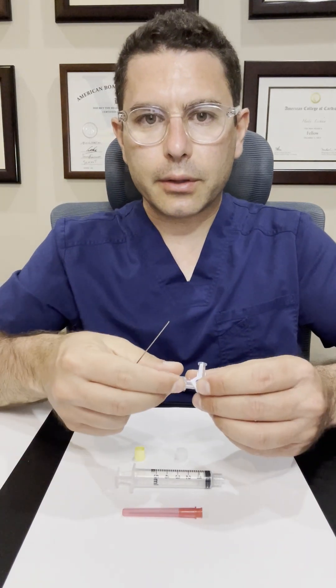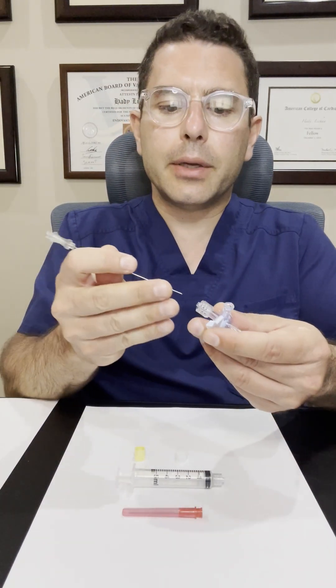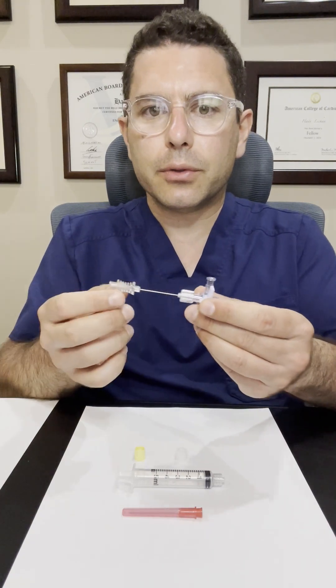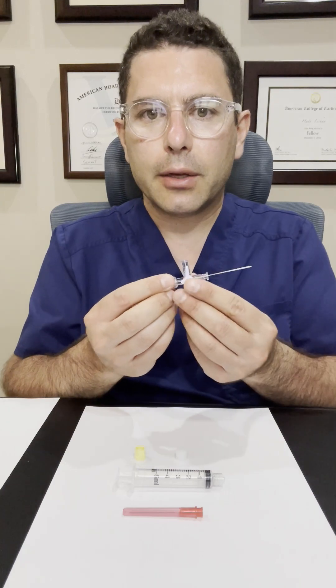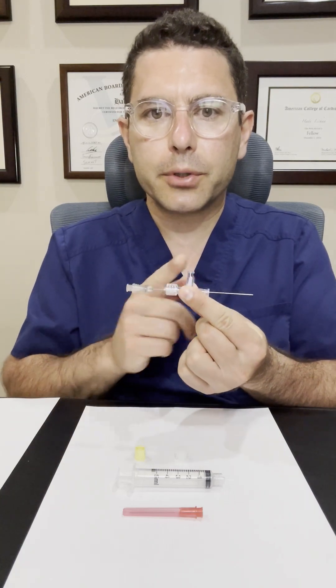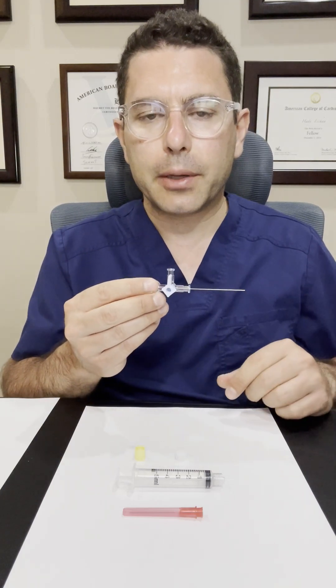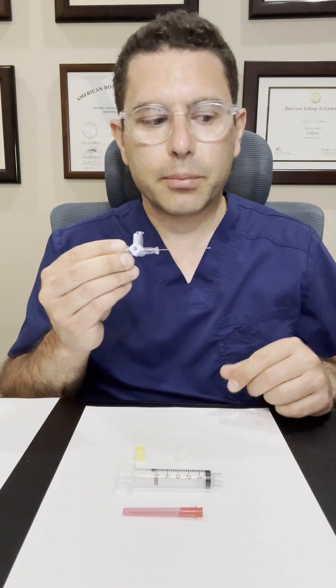The first step of this technique is to take the three-way stop-cock and place the needle introducer, the 014 wire introducer, through the stop-cock with an open valve from the male portion and exiting the female portion. That's the most important step.